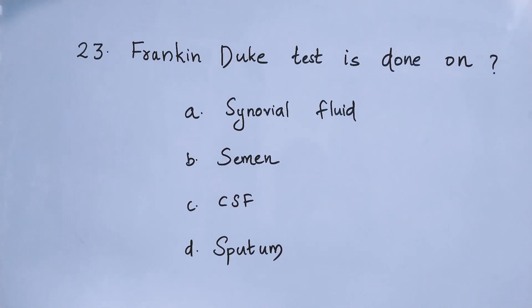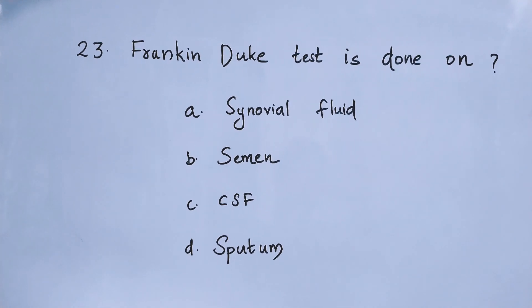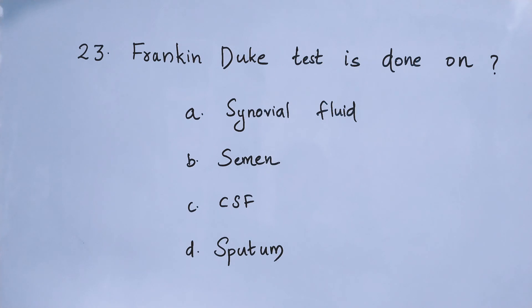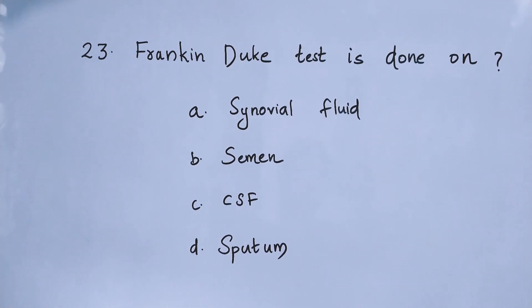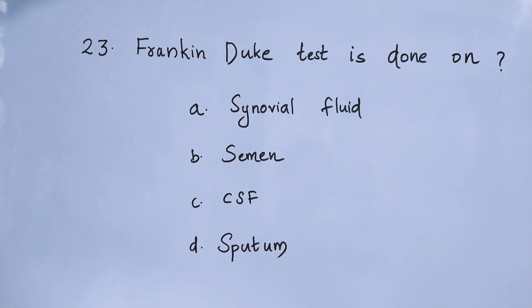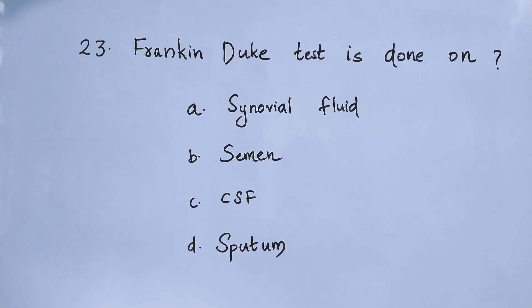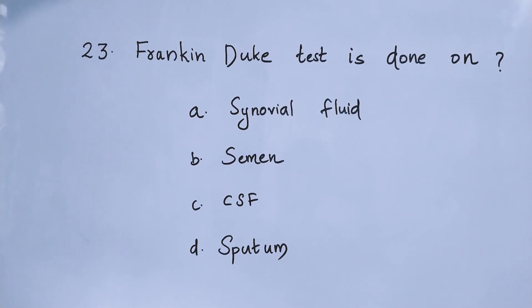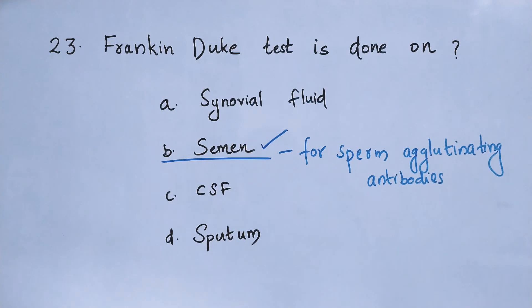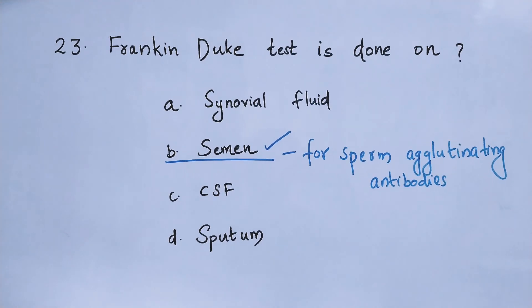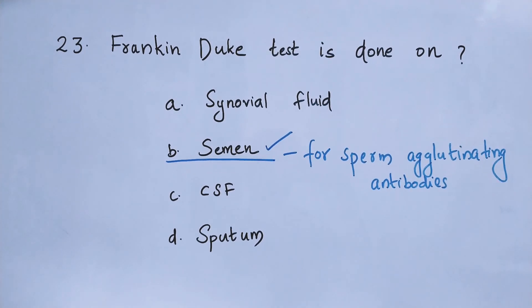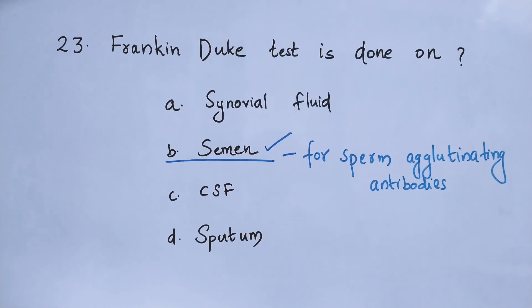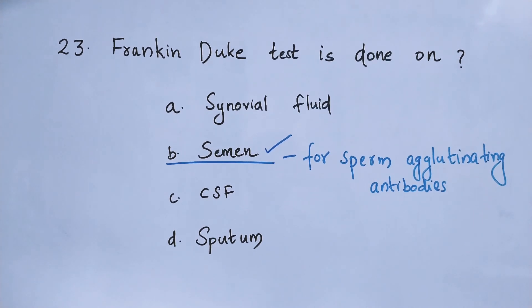Question number 23: Frankenduke test is done on option A: synovial fluid, option B: semen, option C: CSF, option D: sputum. The right answer is option B — semen. Frankenduke test is done on semen for sperm agglutinating antibodies.